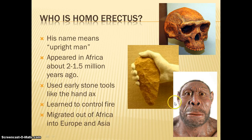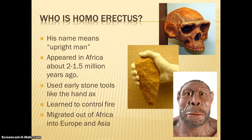And as you can see, even his appearance is starting to look more like a modern human being. Homo erectus was also a little bit smarter because he learned that with the changes in climate, he couldn't stay in Africa forever. So this is when you saw the migration of hominids to different places — Homo erectus migrated into Europe and parts of Asia.